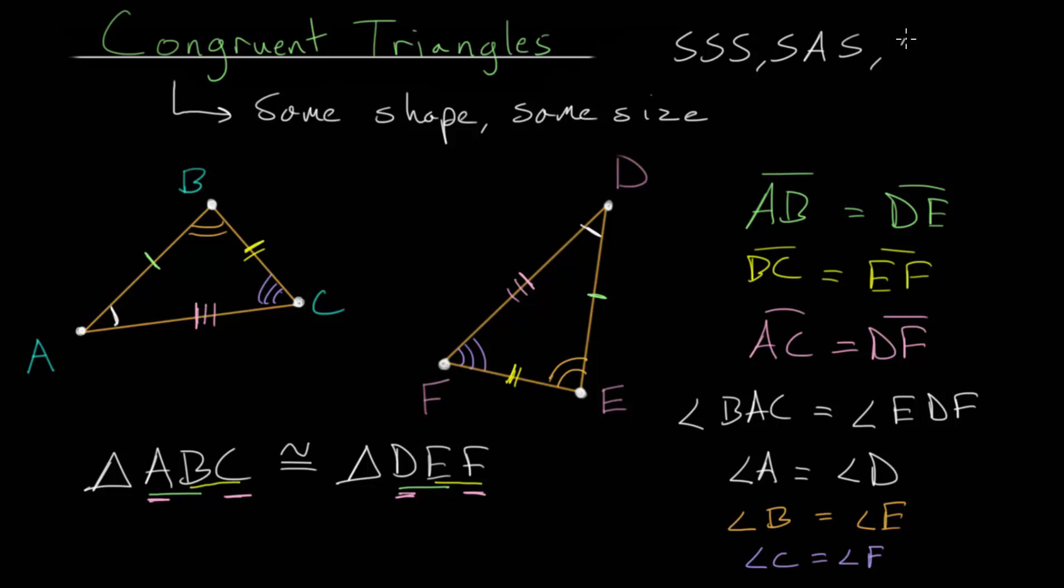We also have angle-side-angle. If we have an angle that corresponds to the other triangle, a side length next to that angle, and then the angle on the other side of that line segment, then the two triangles are congruent. We also have angle-angle-side. So if you have two angles in a row that correspond to the other triangle, and then after that you have a side length that also corresponds to the other triangle, then you know they're equal.